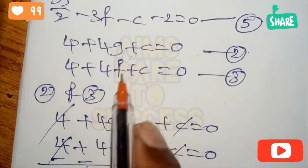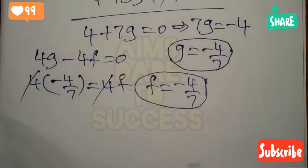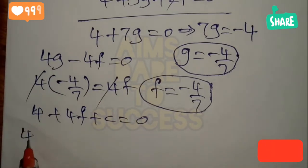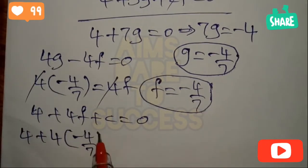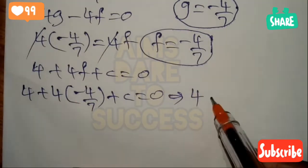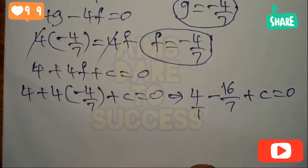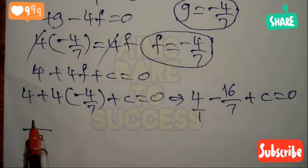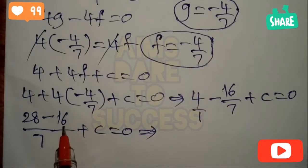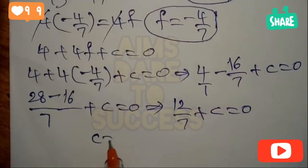To find c, take equation 3: 4 + 4f + c = 0. Substituting f = -4/7: 4 + 4(-4/7) + c = 0, giving 4 - 16/7 + c = 0. Taking LCM of 7: (28 - 16)/7 + c = 0, so 12/7 + c = 0. Therefore c = -12/7.